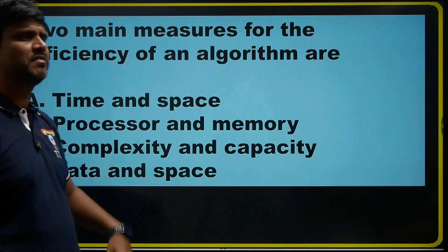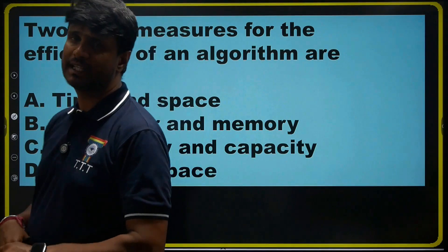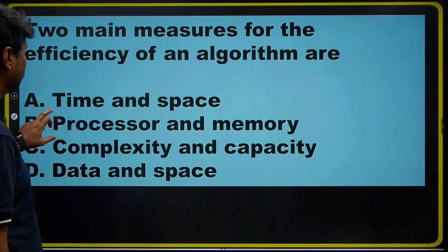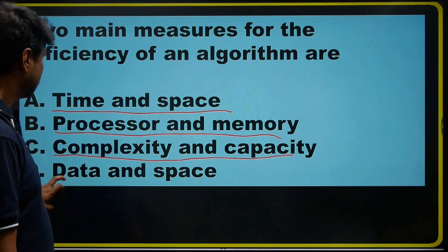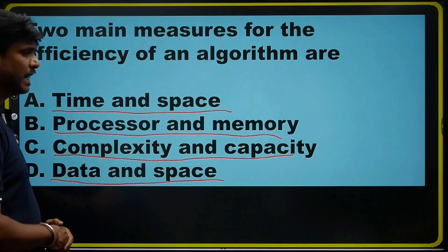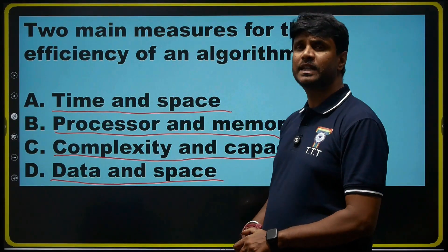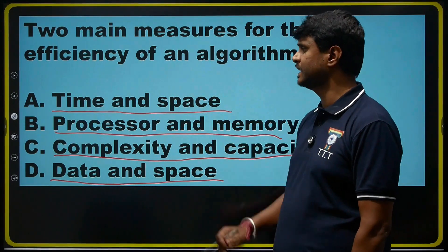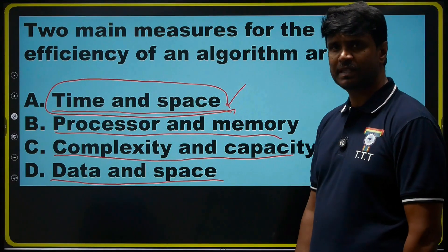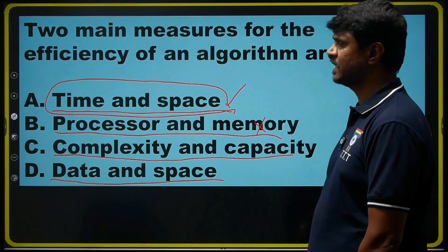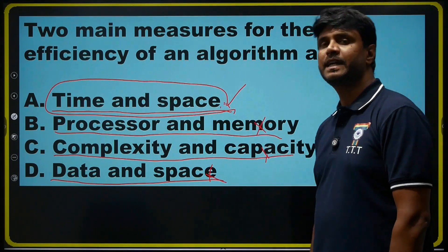The two main measures for efficiency of an algorithm. The options are: time and space, processor and memory, complexity and capacity, and data and space. How can we measure the efficiency of an algorithm? By using time complexity and space complexity. So the correct answer is time and space. It is not processor and memory, not complexity and capacity, and not data and space.